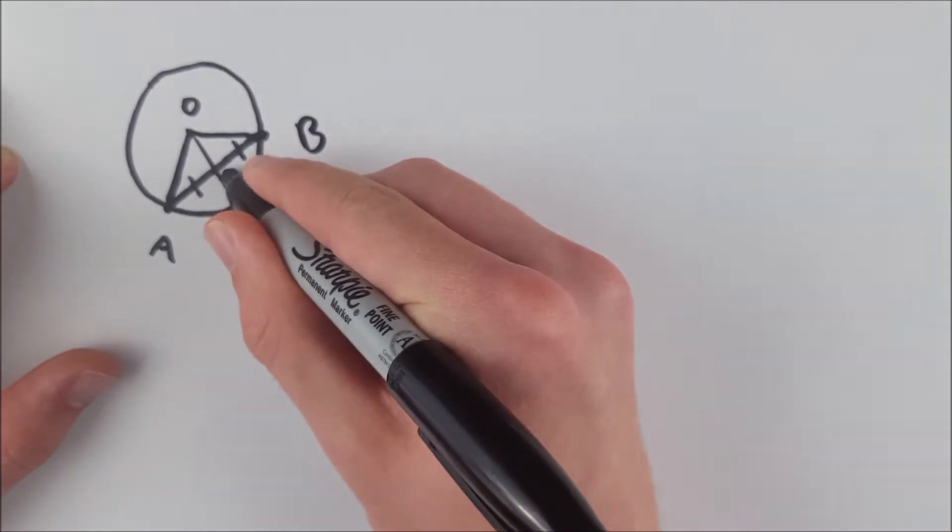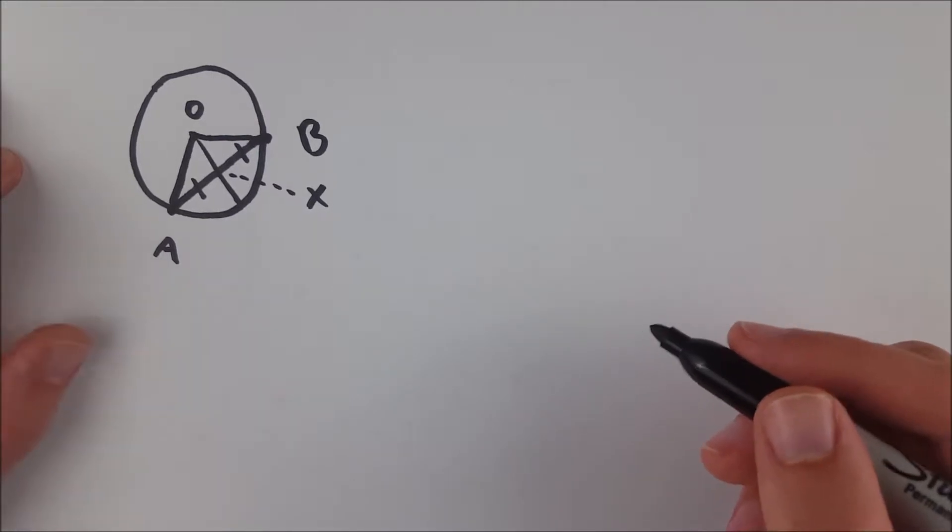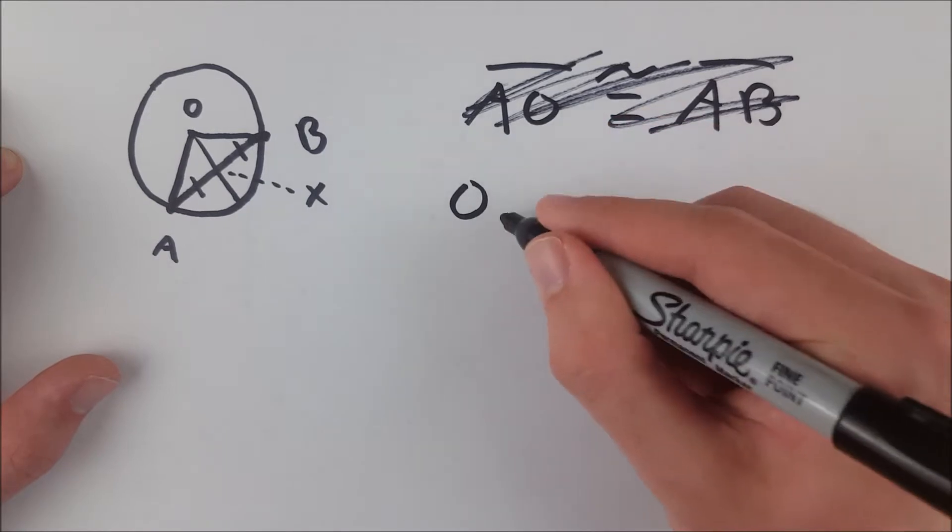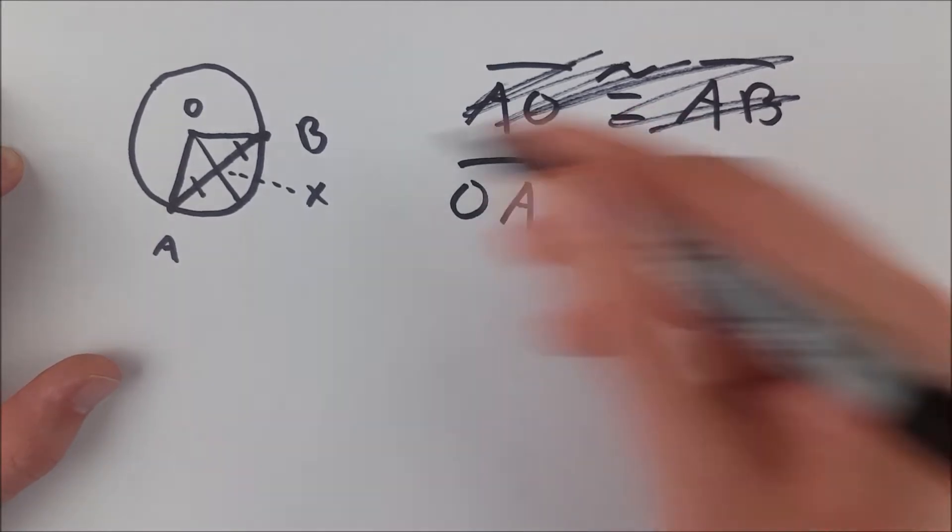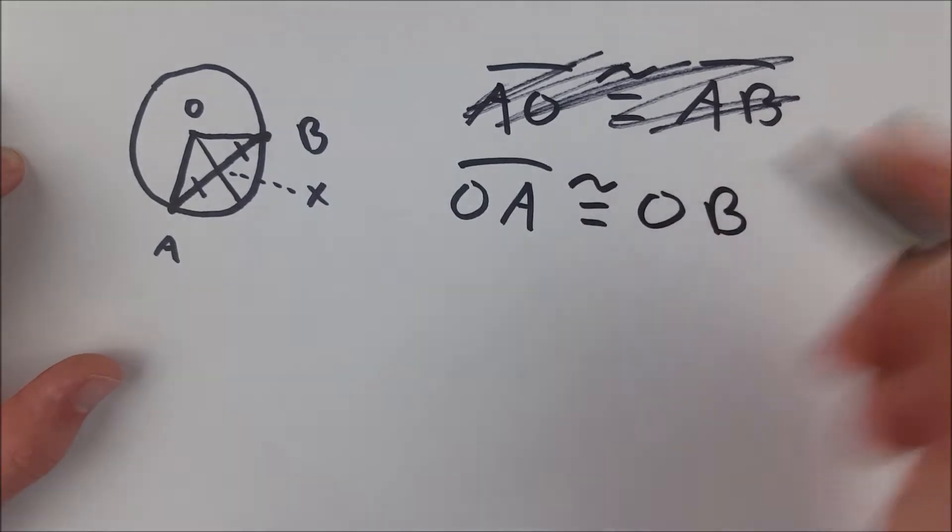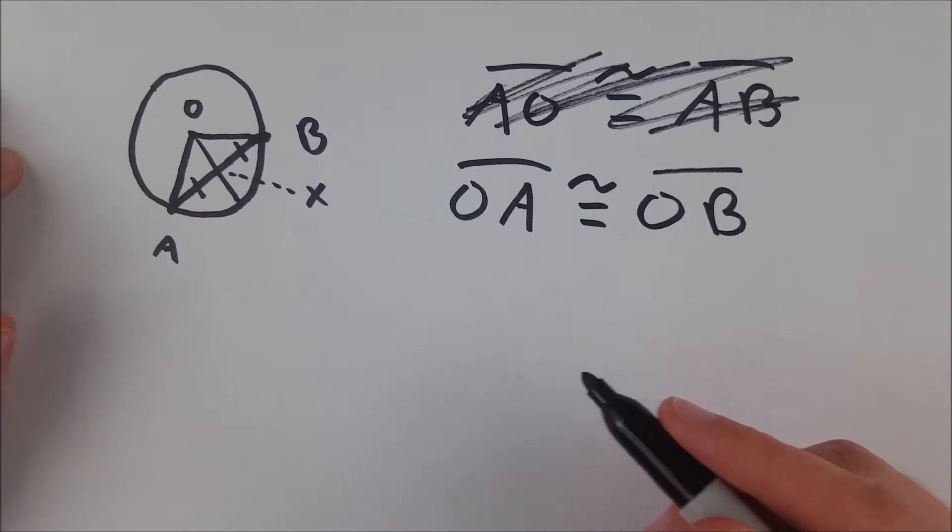And then let's call this point there in the middle X. Now we just need to prove some triangle congruency. So we know that side OA, excuse me, I wrote it wrong up there. We know that side OA, this side, is congruent to side OB, this side here, because by definition they are both radii of the circle.